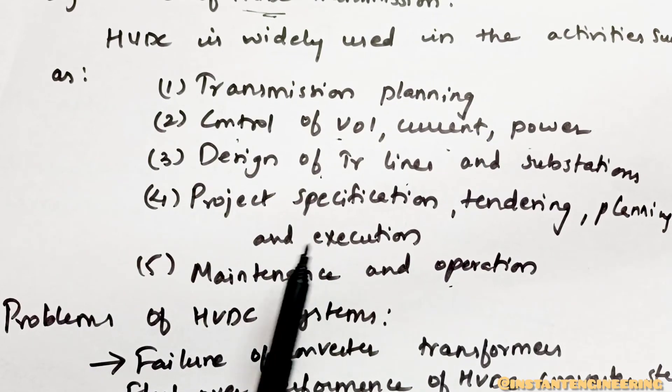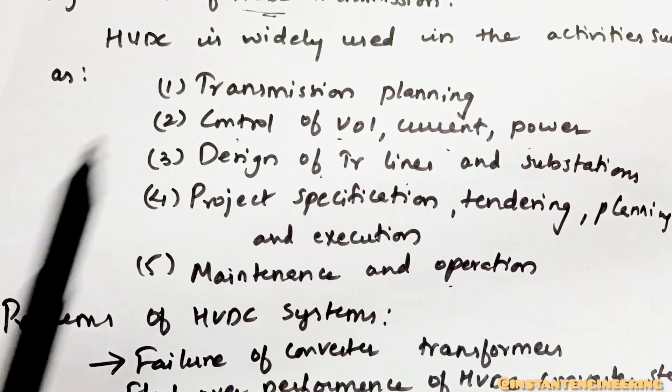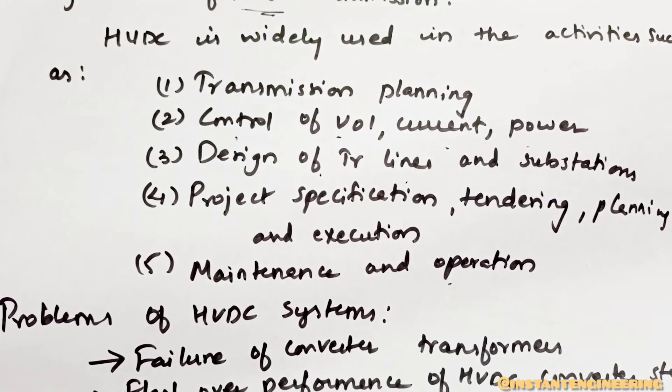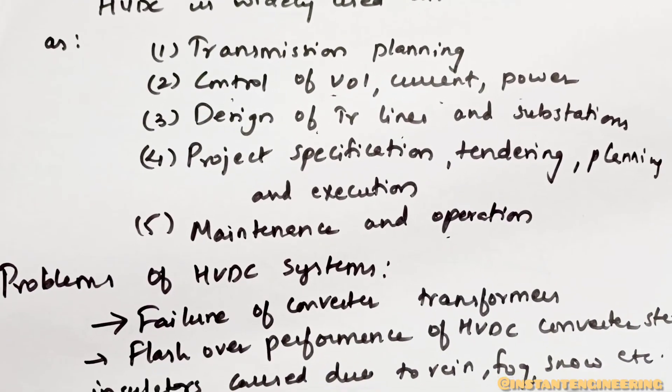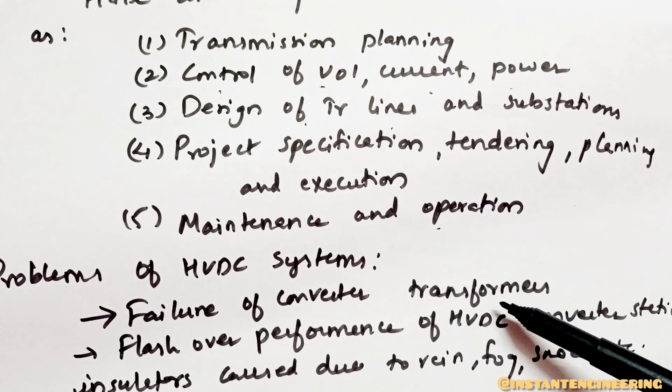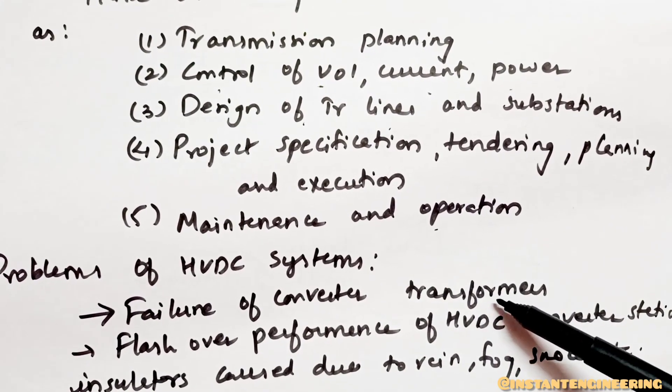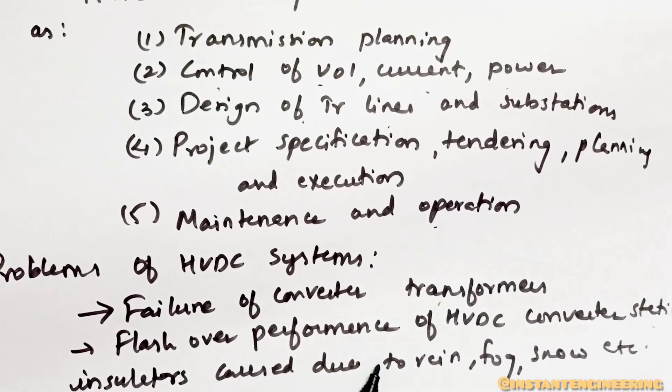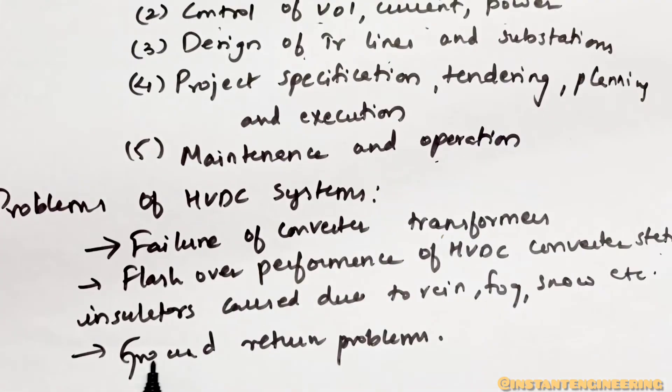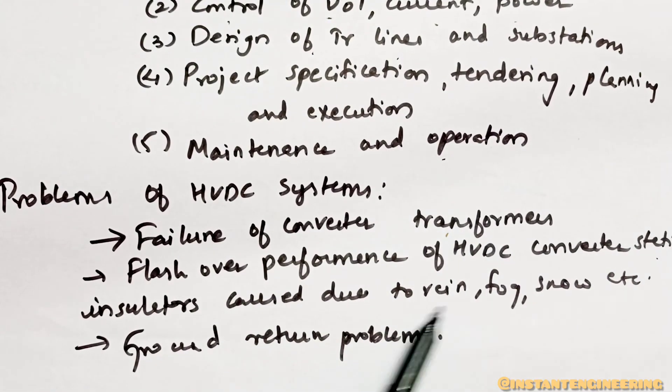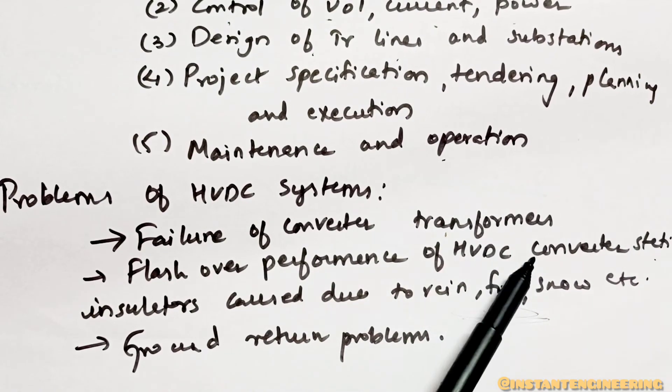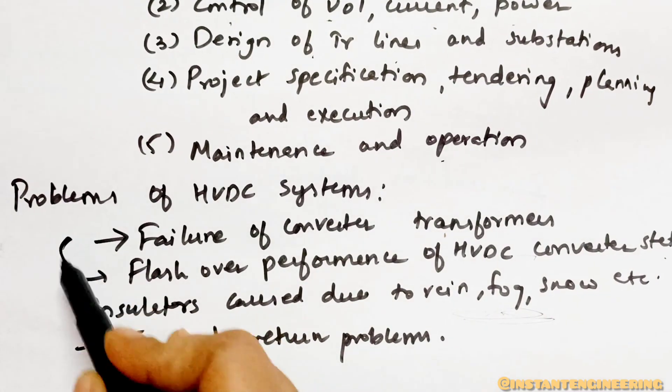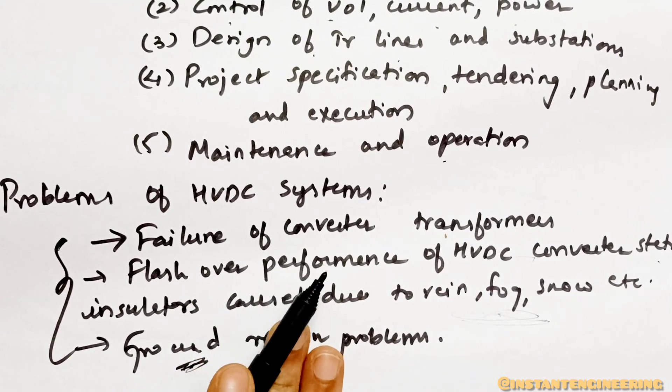Next, we will see - we have seen the goodness of HVDC. Now there are some problems also. What are those problems? Failure of converter transformer - there will be converter transformers, so if there is any failure in converter transformers. Flash over performance of HVDC converter station. Insulators caused due to rain, fog, snow, etc. And ground-related problems. If there is any snow, fog, or anything, the HVDC converter station might have some problems and ground problems also. These are mainly problems which will occur in an HVDC system.